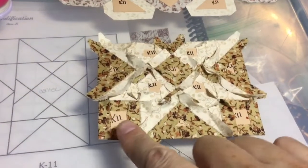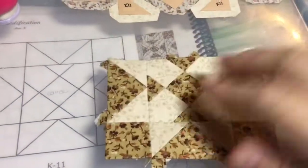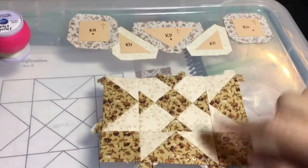So I've attached my bottom row to my middle row. And so the next section is to do the top row the same way I did the bottom.